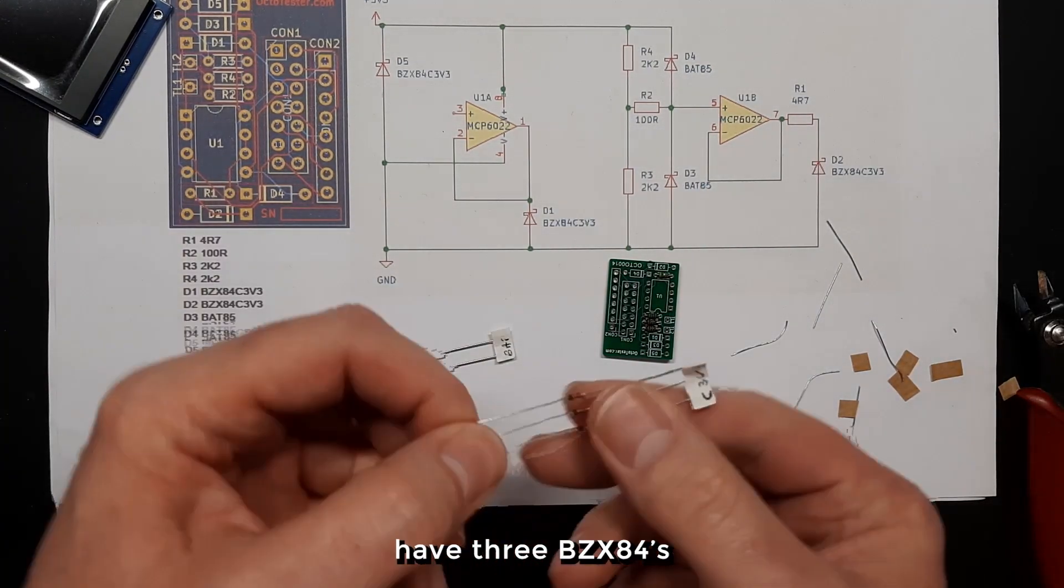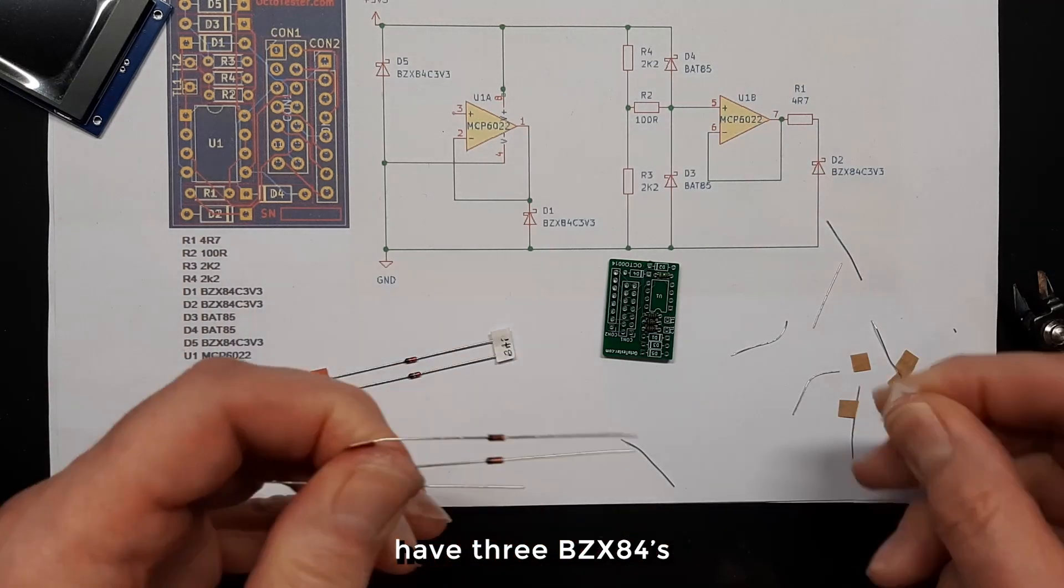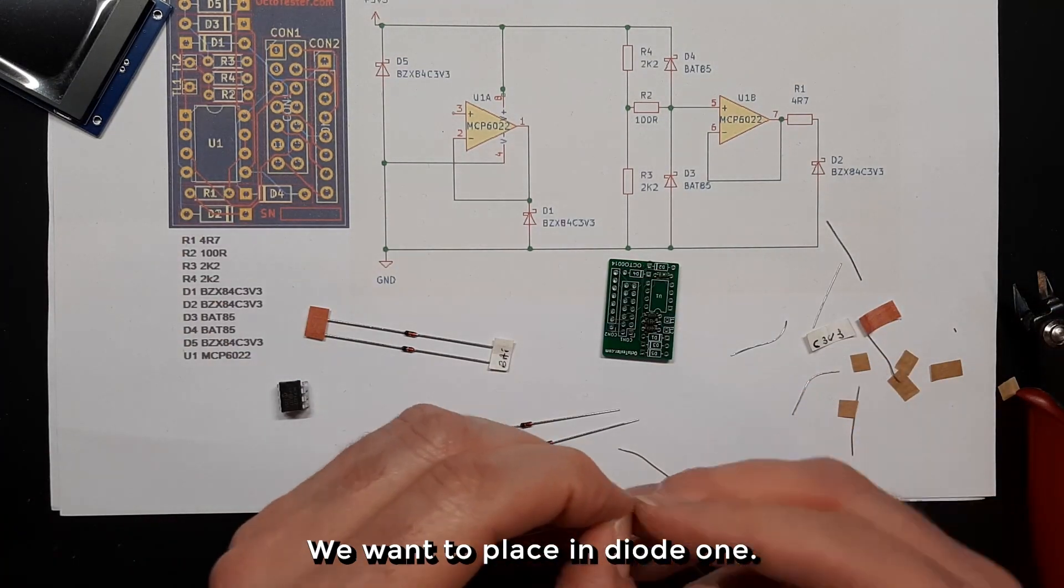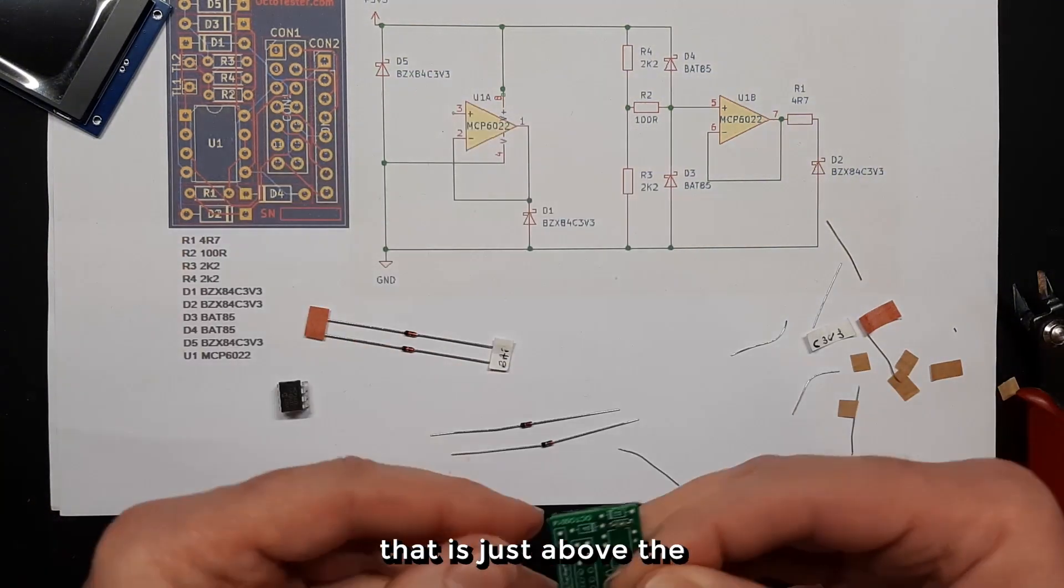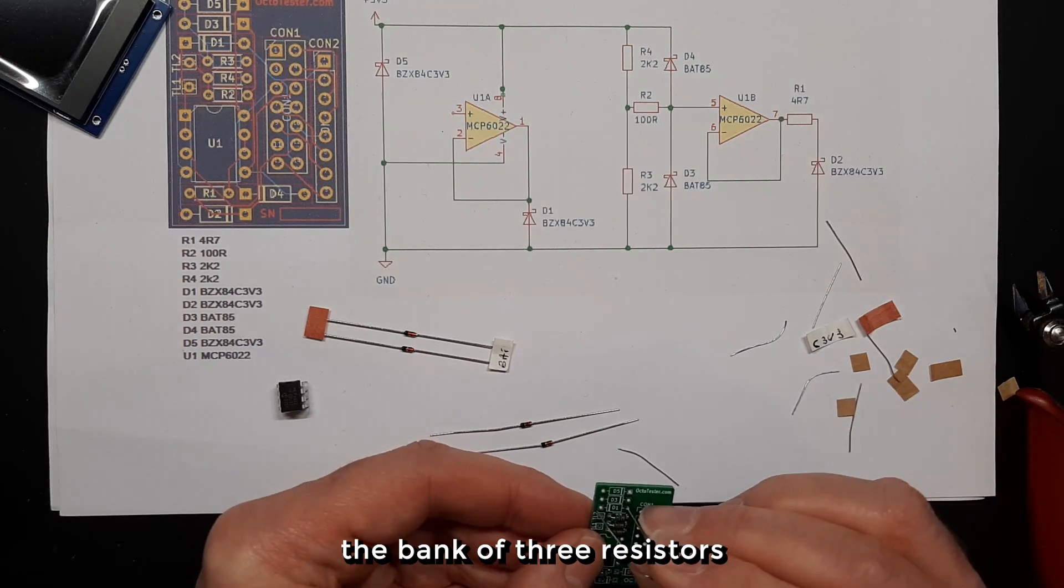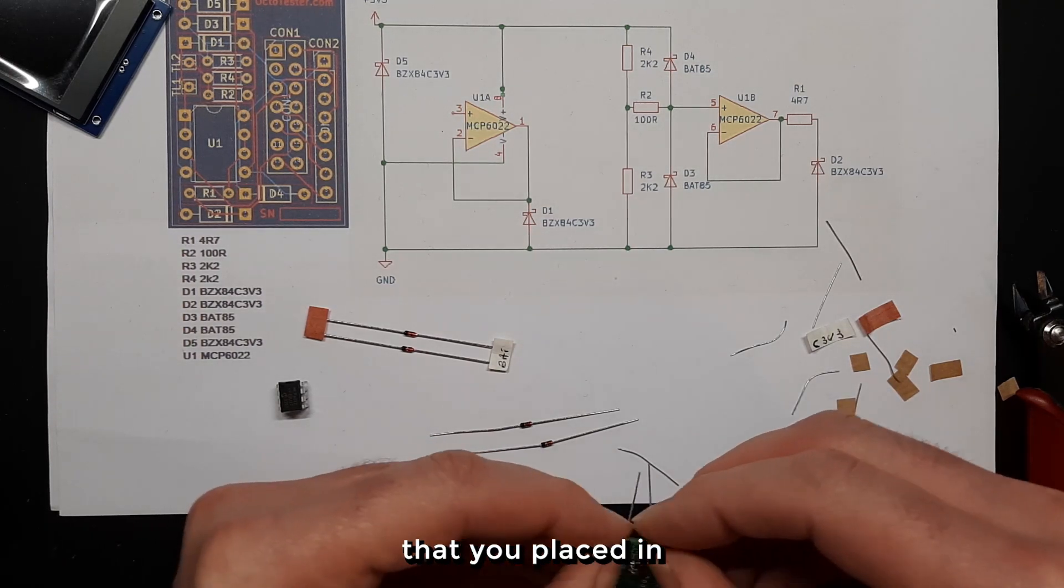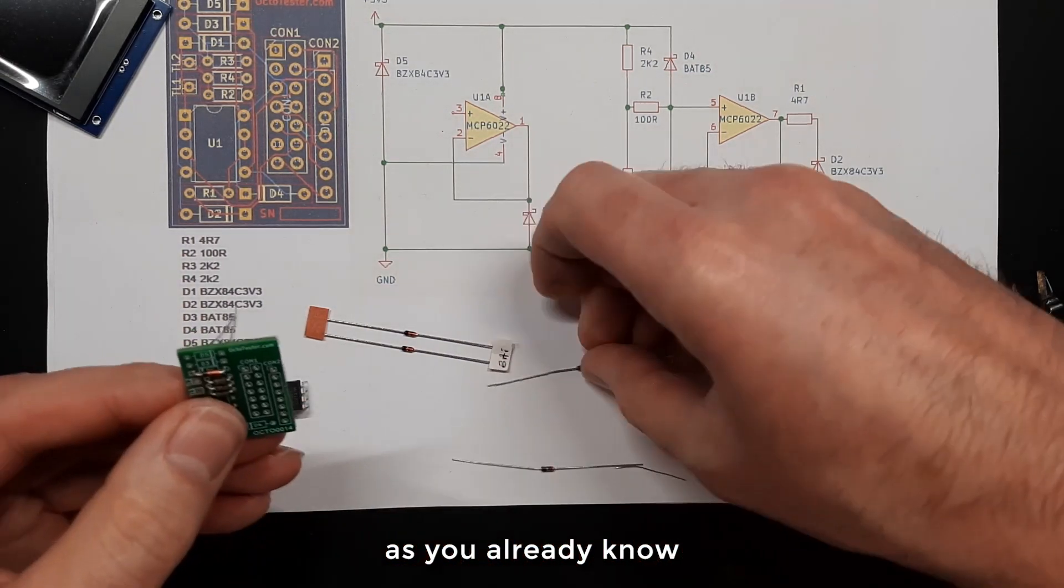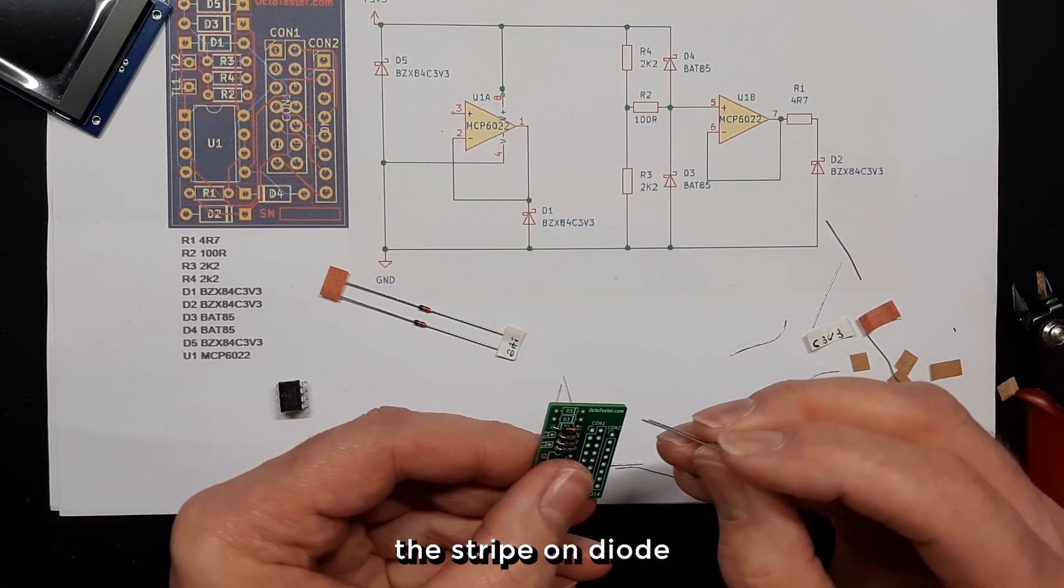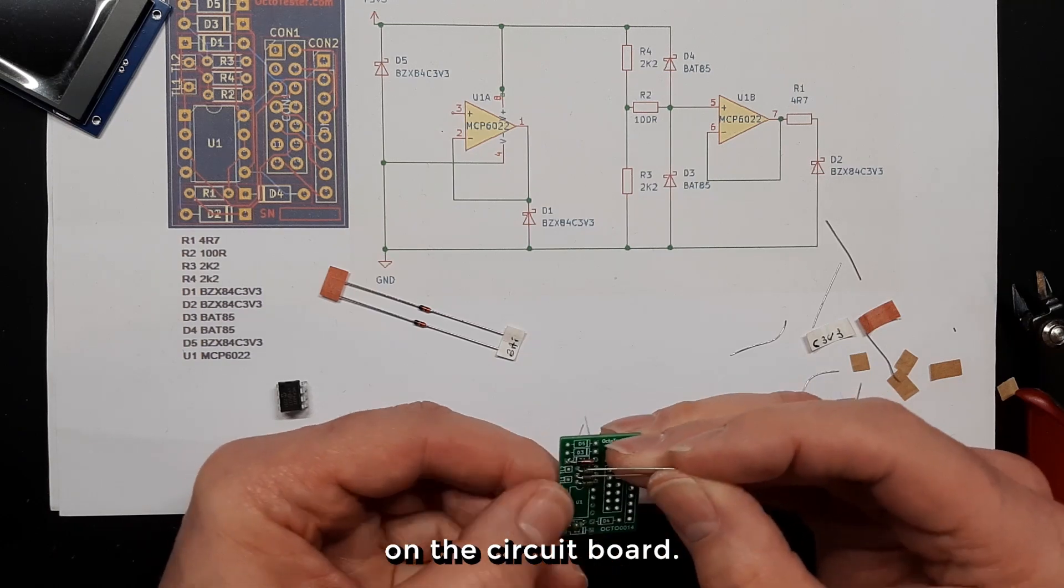On to our diodes. You should have three BZX84s. The first of those diodes we want to place in diode 1. That is just above the bank of three resistors that you placed in. As you already know, mind the polarity on the diodes, so just match up the stripe on the diode with the stripe on the circuit board.